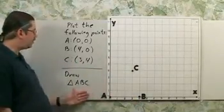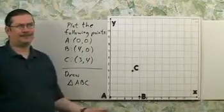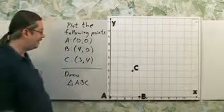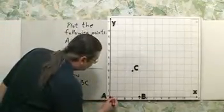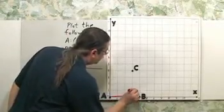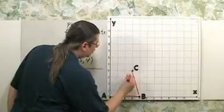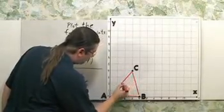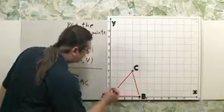Second part is to draw triangle ABC. Very easy. Just connect the dots. You're going to do something like this. A to B, and then C, back to A.